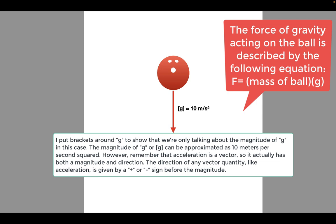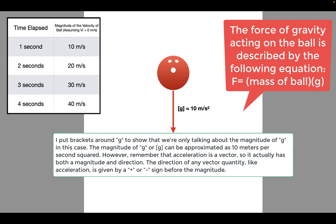Little g can be approximated to around 10 meters per second squared. Assuming the ball started with an initial velocity of zero meters per second, after one second it would have a velocity of around 10 meters per second. After two seconds, the velocity increases to 20 meters per second. After three seconds, 30 meters per second, and after four seconds, 40 meters per second. The velocity is increasing by 10 meters per second every second the ball is falling.